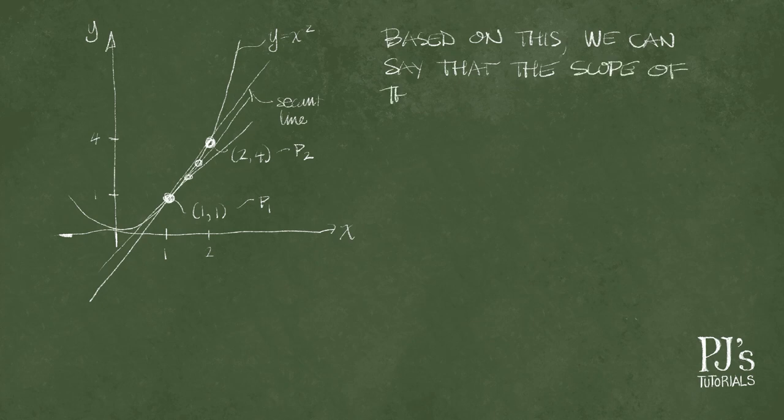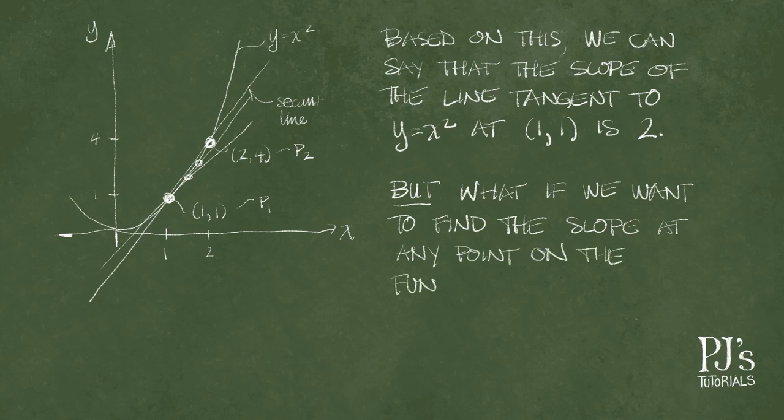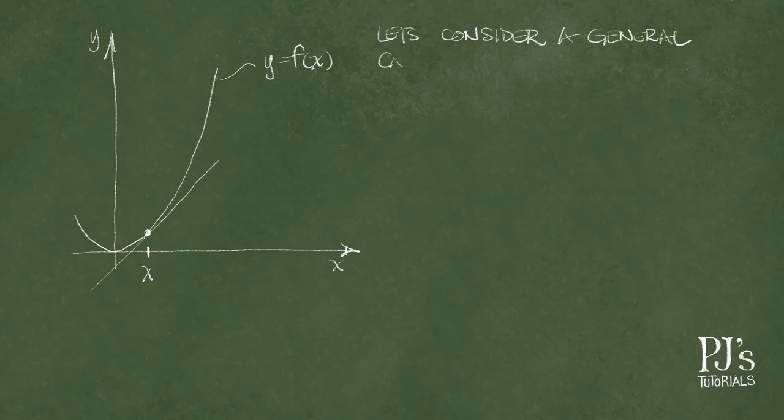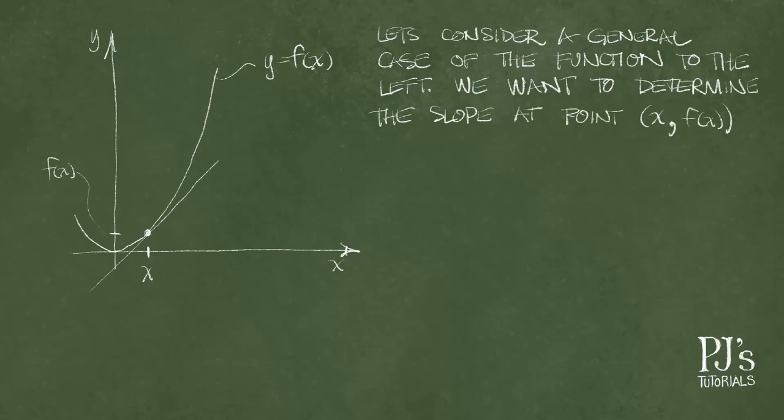Based on this, we can say that the slope of the line tangent to y equals x squared at (1,1) is 2. But what if we want to find the slope at any point on the function? We can write this with a general form. Let's consider this. For a function y equals f of x and a given point x, f of x, what is the slope of the function?